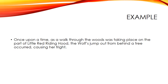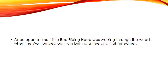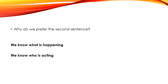Let's take a look at an example. First version: 'Once upon a time, as a walk through the woods was taking place on the part of Little Red Riding Hood, the wolf's jump out from behind a tree occurred, causing her fright.' Compare that to: 'Once upon a time, Little Red Riding Hood was walking through the woods when the wolf jumped out from behind a tree and frightened her.' Obviously the second one is better — you probably instinctively identified it as a better sentence.